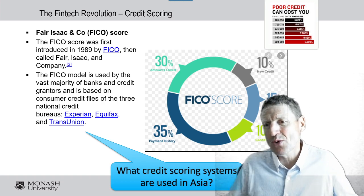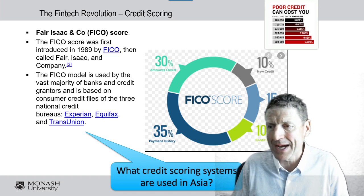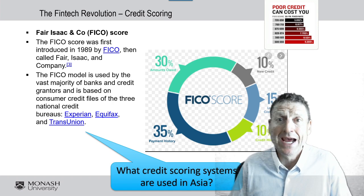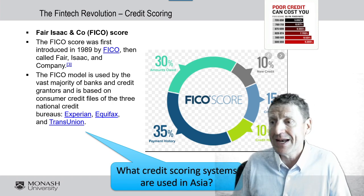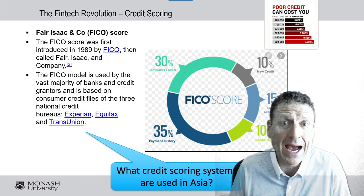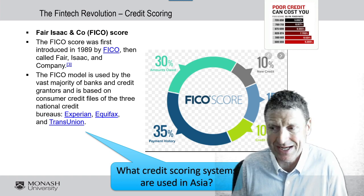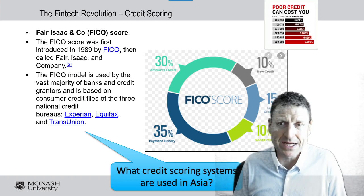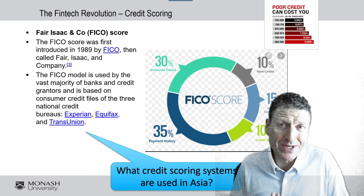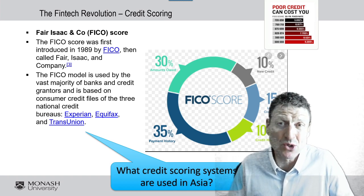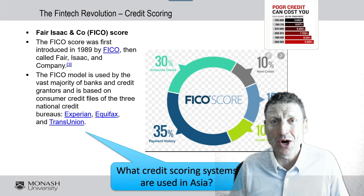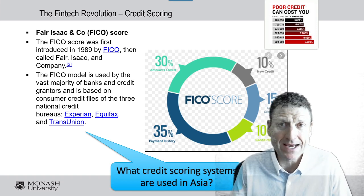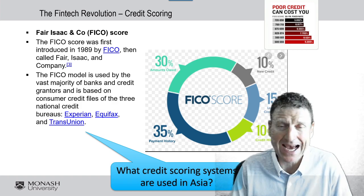What was it all about? It was about scoring you: how much do you owe, how much new credit do you have, the length of credit history, your payment history, and the credit mix. That was the traditional source of information that banks relied on to determine the quality of a customer to repay a loan.